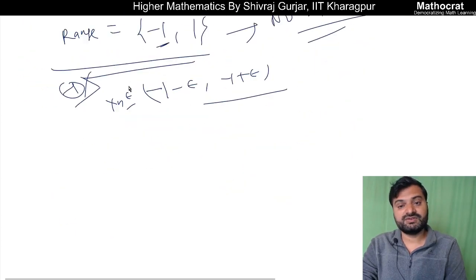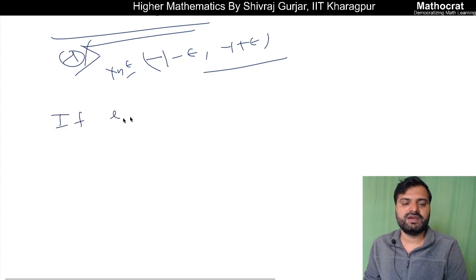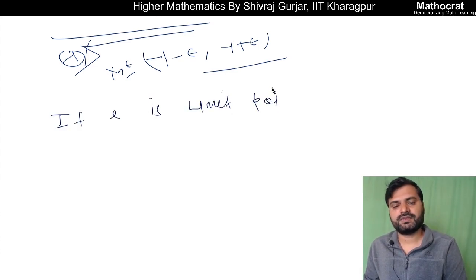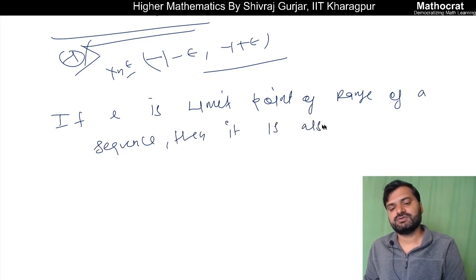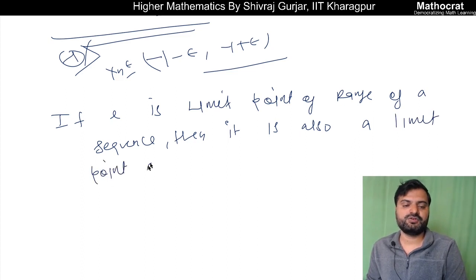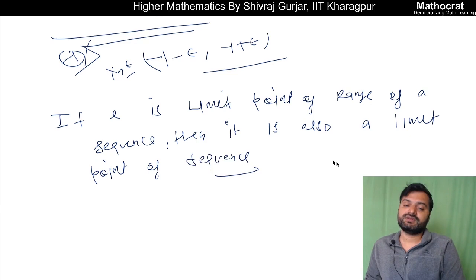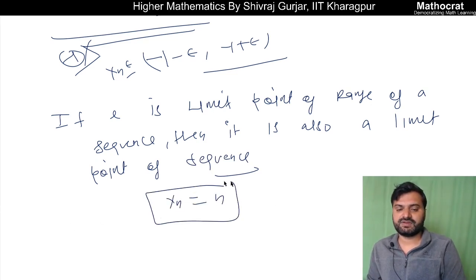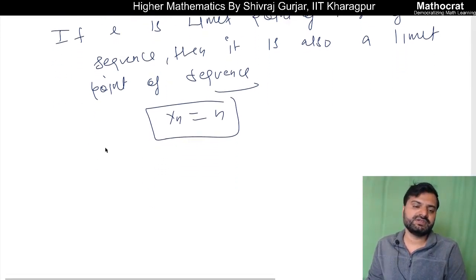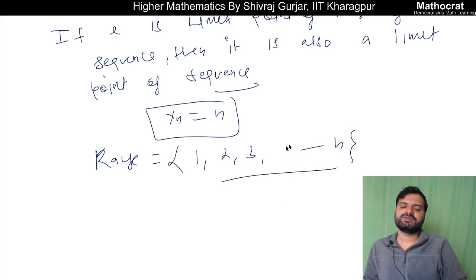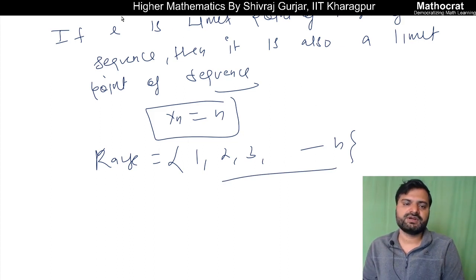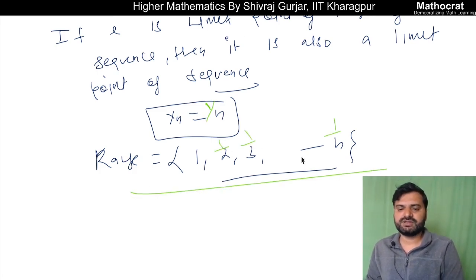However, the reverse is true: if L is a limit point of the range of a sequence, then it is also a limit point of the sequence. Now consider the sequence xn = 1/n. Here the range is {1, 1/2, 1/3, ..., 1/n, ...}. The limit point of this range is 0, because in the interval (0 minus epsilon, 0 plus epsilon), we can find elements 1/2, 1/3, 1/4, and so on — many elements fall inside this interval.